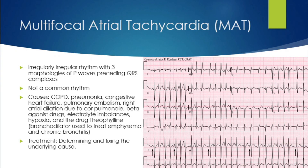Multifocal atrial tachycardia, or MAT, is an irregular tachycardic rhythm with a P wave before every QRS, but there need to be three different types of P wave morphologies, which you can see in the picture on the right. Luckily, this is not a super common rhythm — it's usually associated with pulmonary issues or historically with theophylline administration. You treat it very similarly to sinus tachycardia: fix the underlying issues and that usually fixes the MAT.